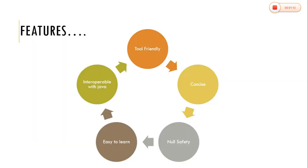What are the features of Kotlin? The features include tool friendly, security, interoperable with Java, concise, easy to learn, and null safety. Kotlin is more concise and reduces the amount of boilerplate code.